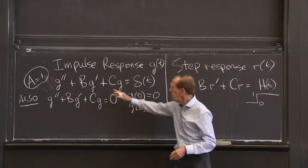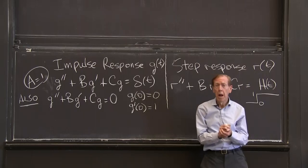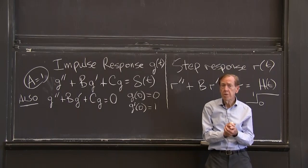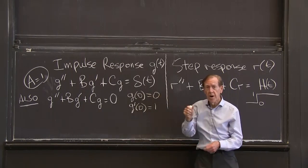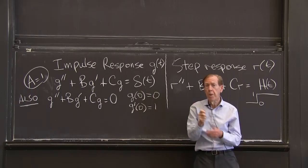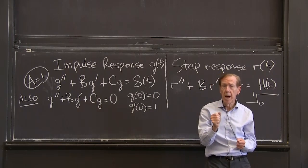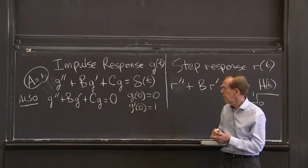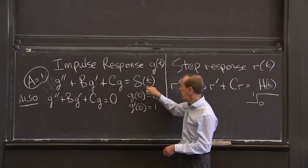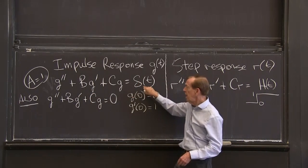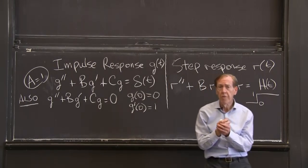Those are the responses. I'm going to call g the impulse response, where the right-hand side is a delta function — an impulse, a sudden force at the moment t equals 0. That's the equation. That's the impulse, and g is the response. And we want a formula for it.